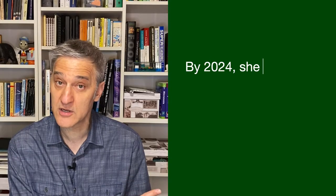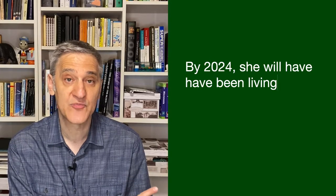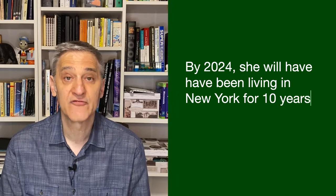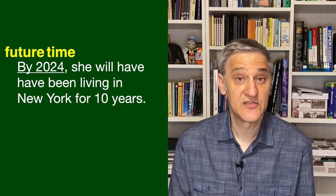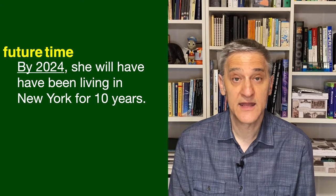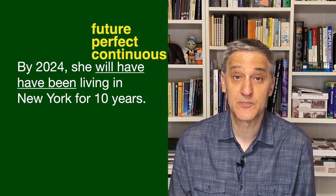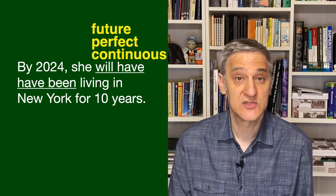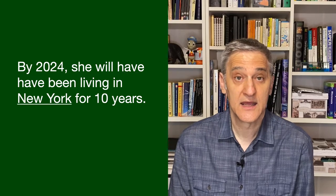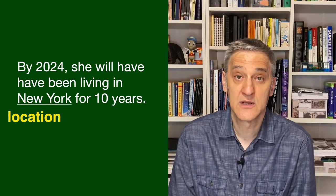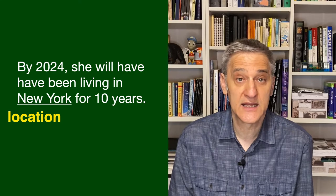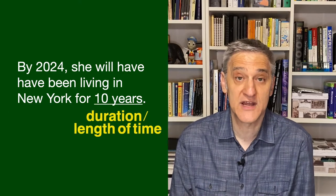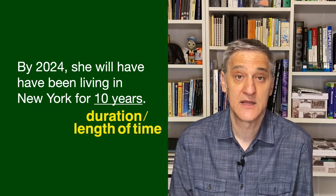Check out this example: By 2024, she will have been living in New York for 10 years. 2024 is the future time. Then it follows with the future perfect tense — will have been — then the location, New York, and then the duration, 10 years. This represents the result.